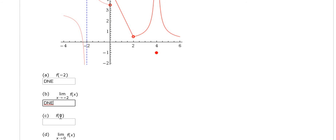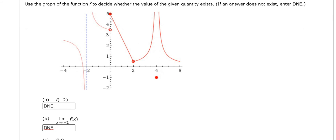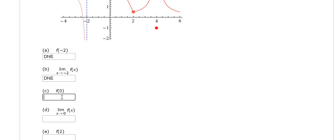f of 0, that's part c. So f of 0 is the y value when x is equal to 0. That would be 5. When x is 0, the y value is simply 5.